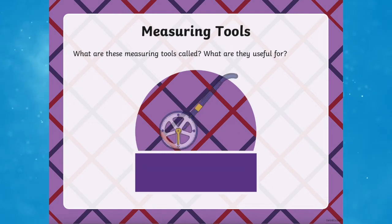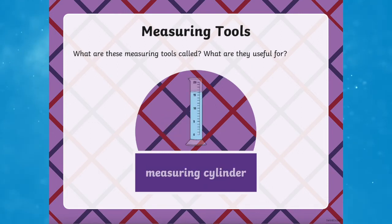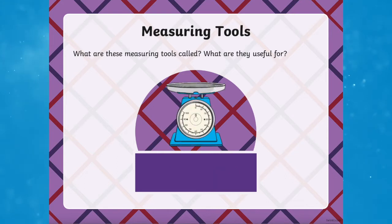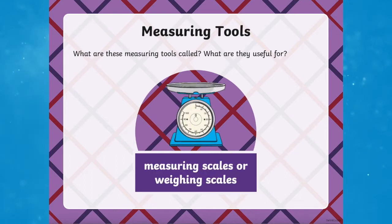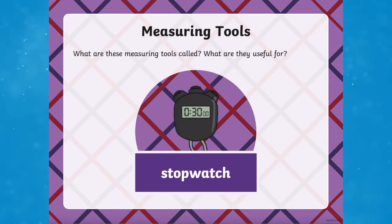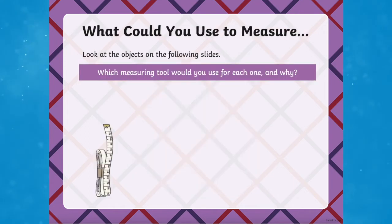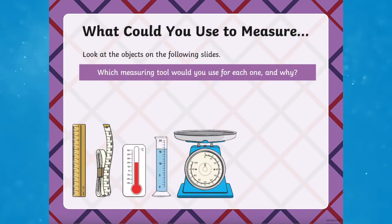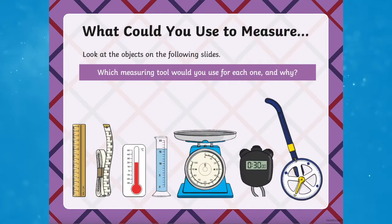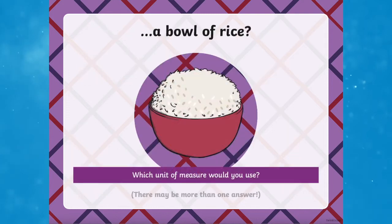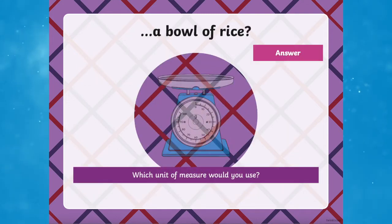This PowerPoint teaches children about measuring things in units of measurement such as centimeters and meters, grams and kilograms, milliliters and liters, degrees Celsius and time measurements. This PowerPoint is sure to help children to fully understand when to use each type of measurement and why they're used.